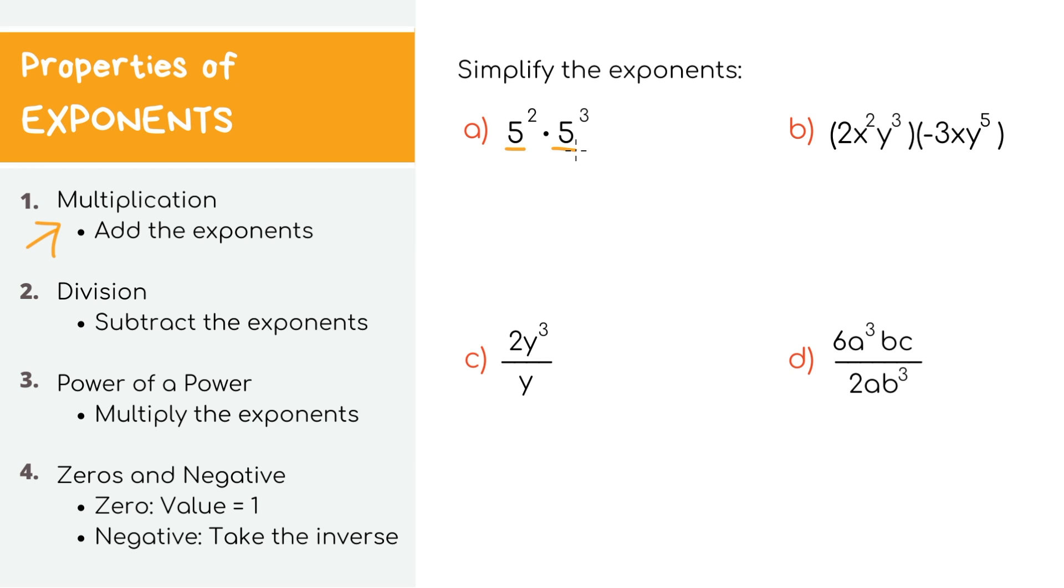For example, if the base values were something like 4 and 5, we wouldn't be able to just add up the exponents. But in our example, we can combine the 5s into just 5, then add the exponents. So, simplified, the expression is just 5 to the 5th.